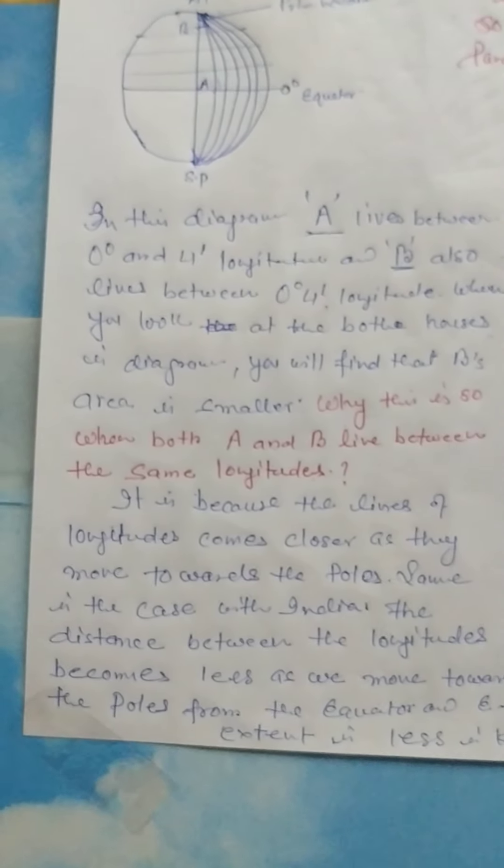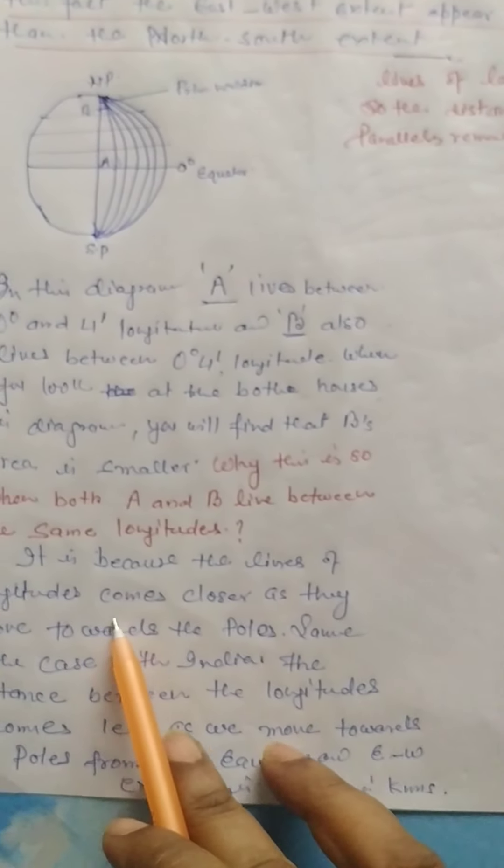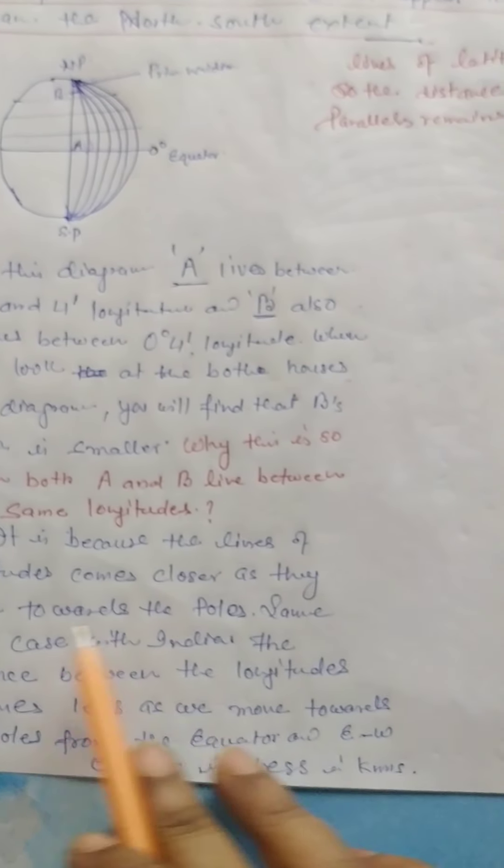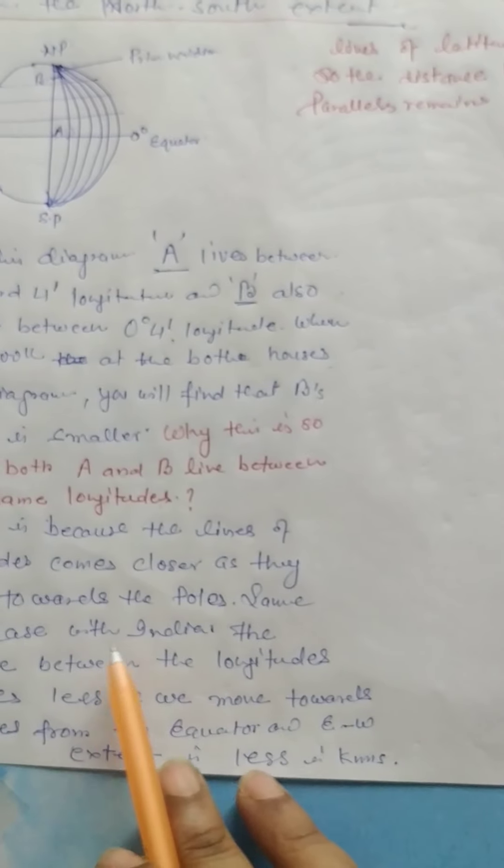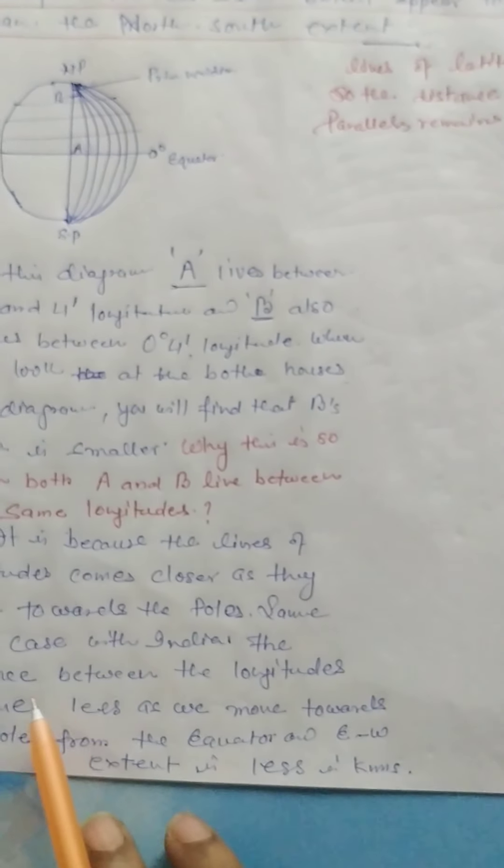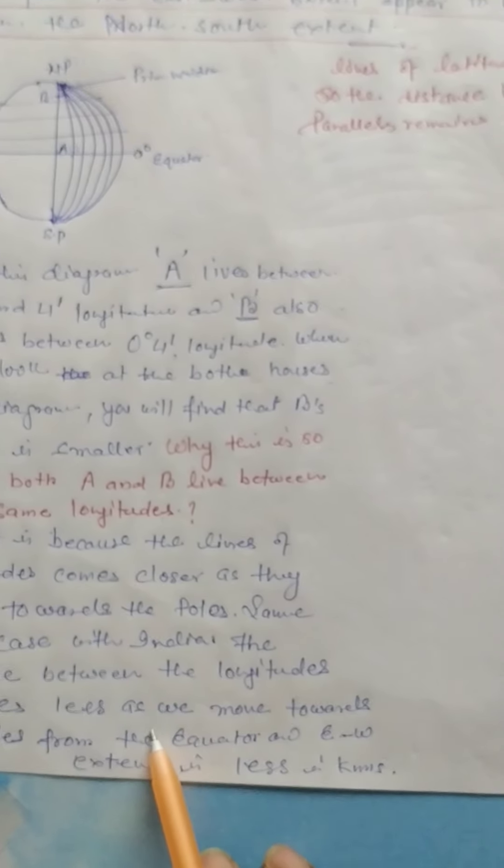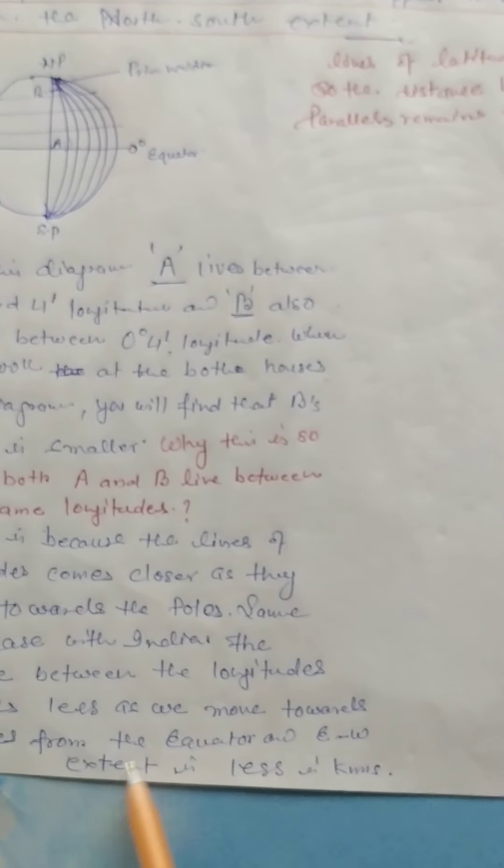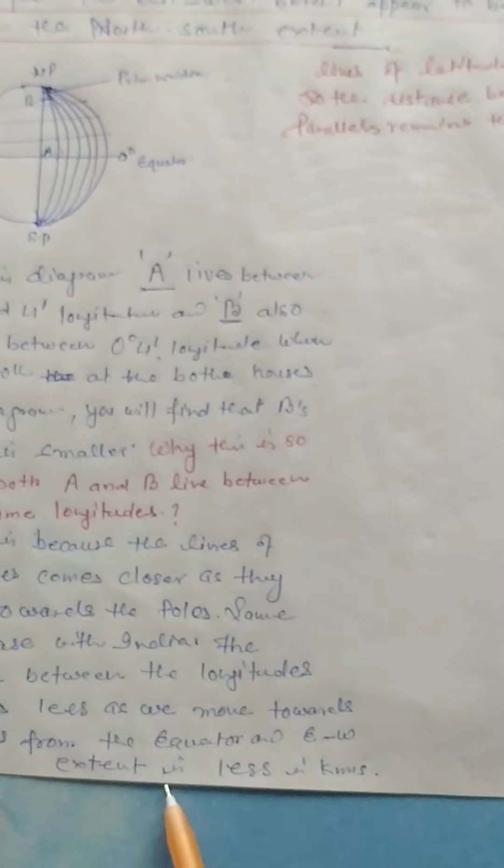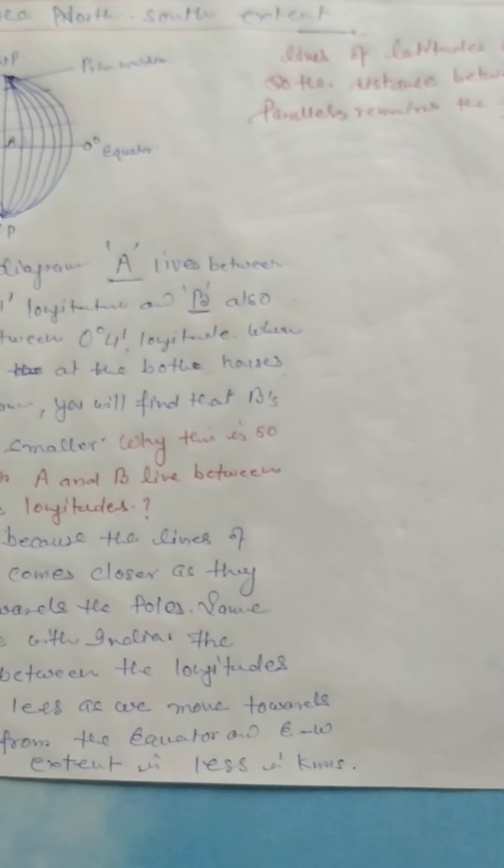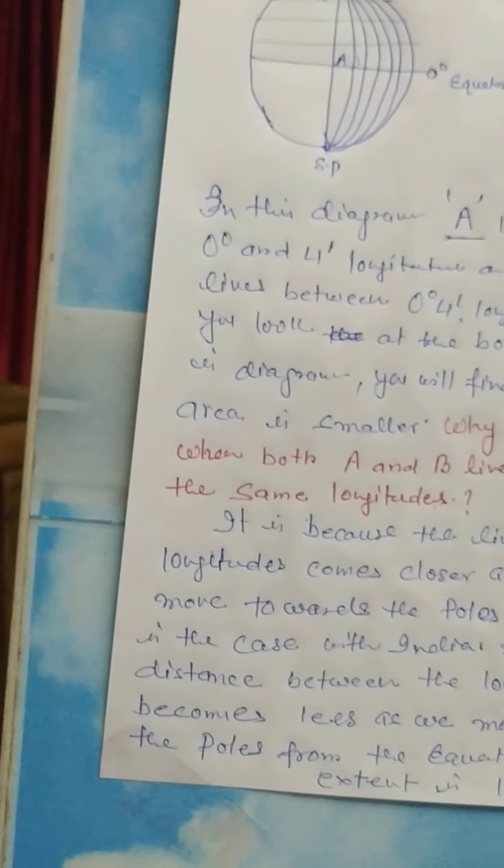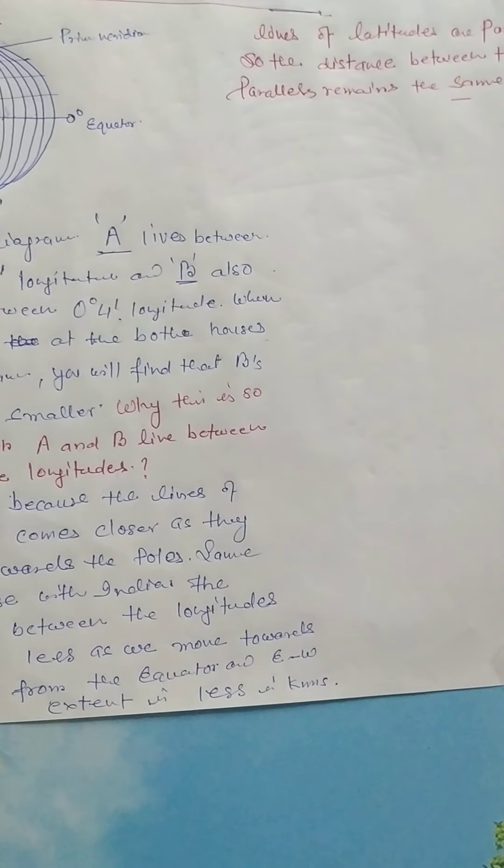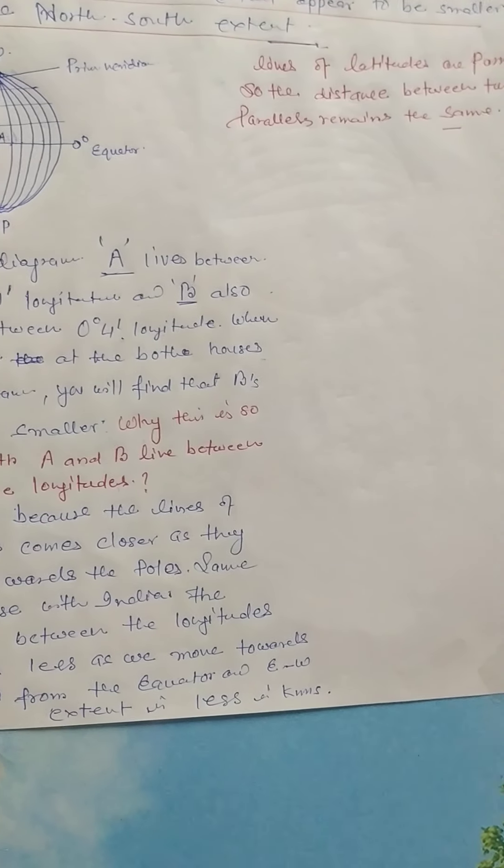It is because the lines of longitudes become closer as they move towards the poles. Same in the case with India. The distance between the longitudes becomes less as we move towards the pole from the equator, and east-west extent is less in kilometers. Whereas latitudes are parallel, so the distance between two parallels remains the same.